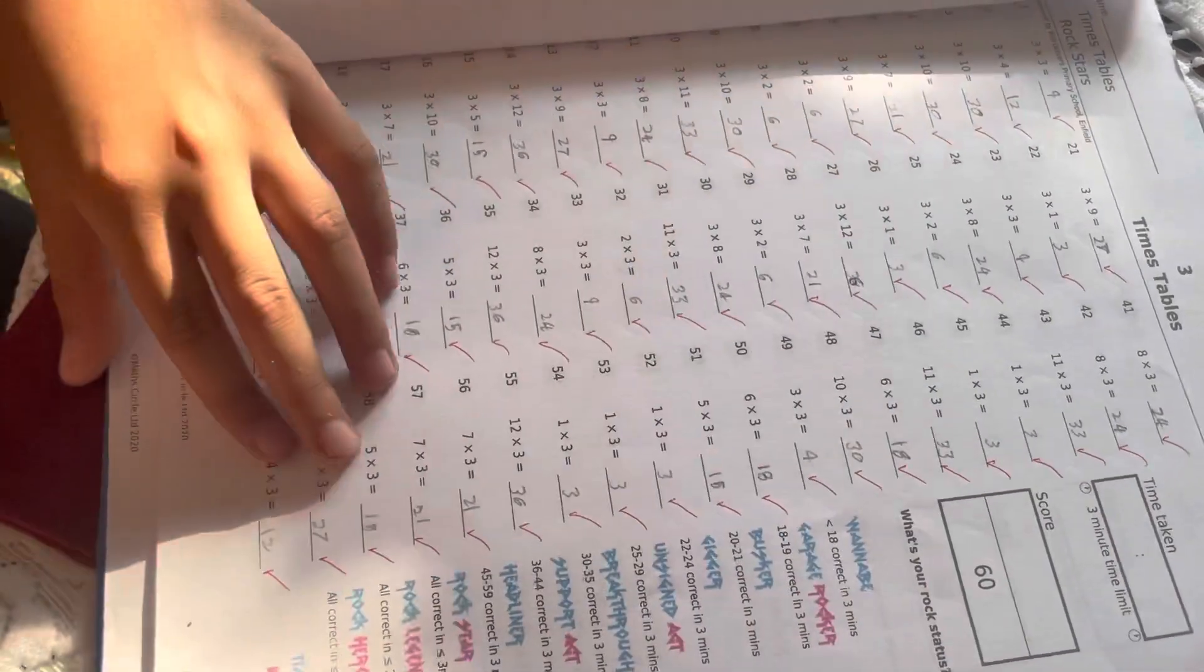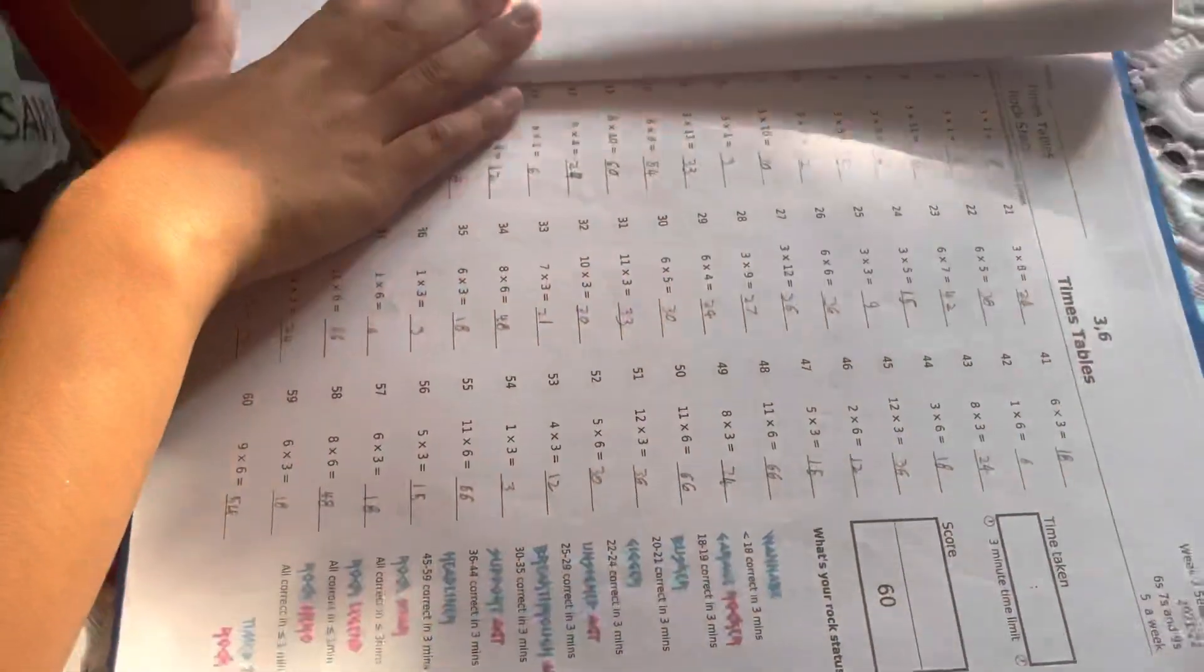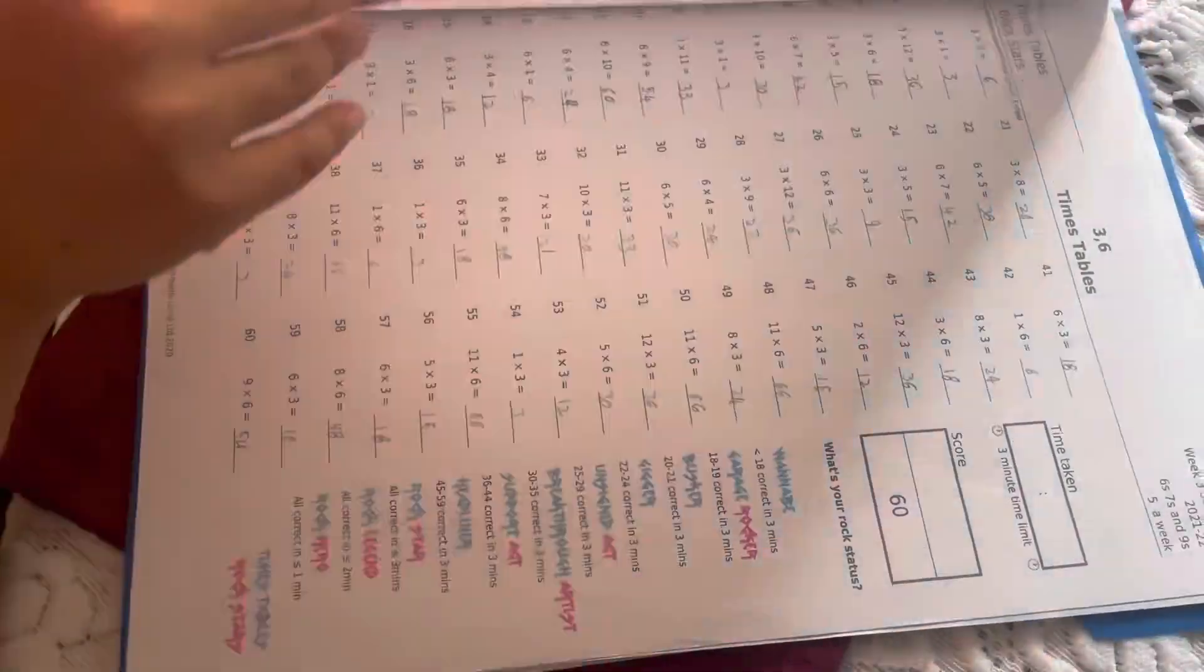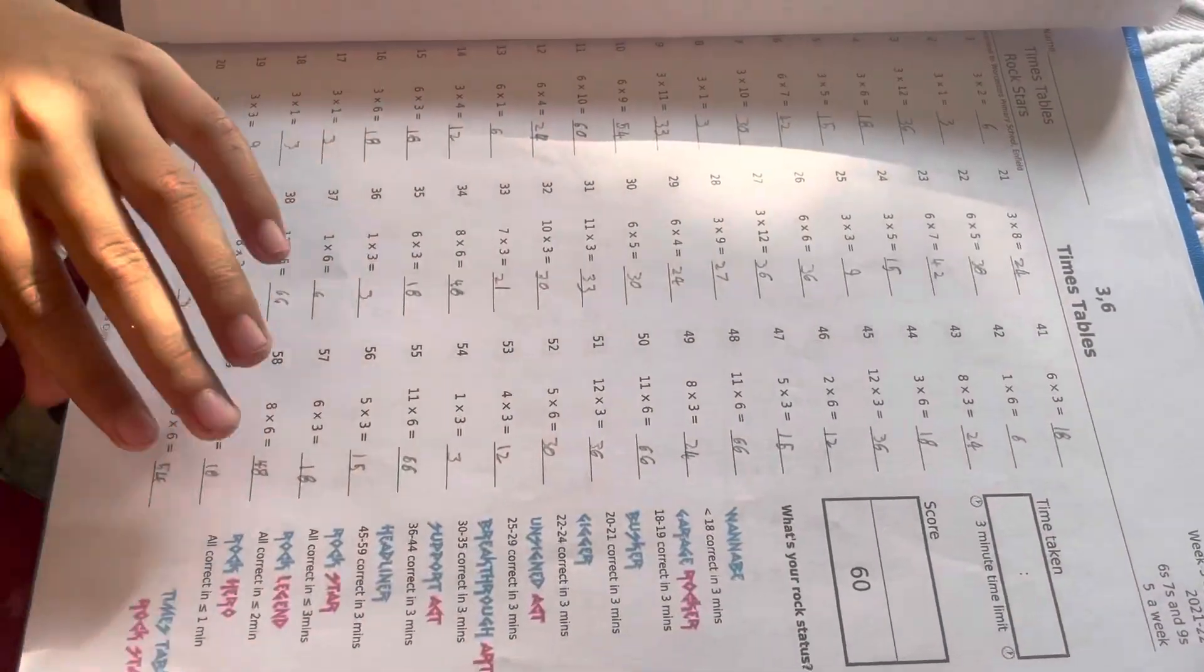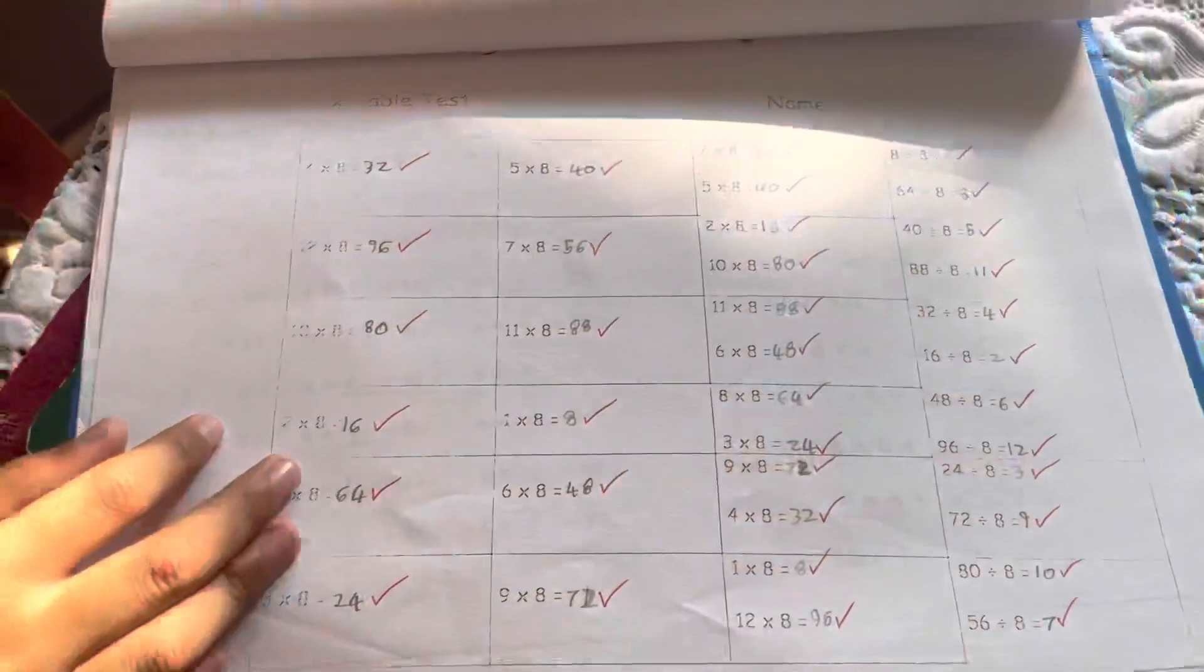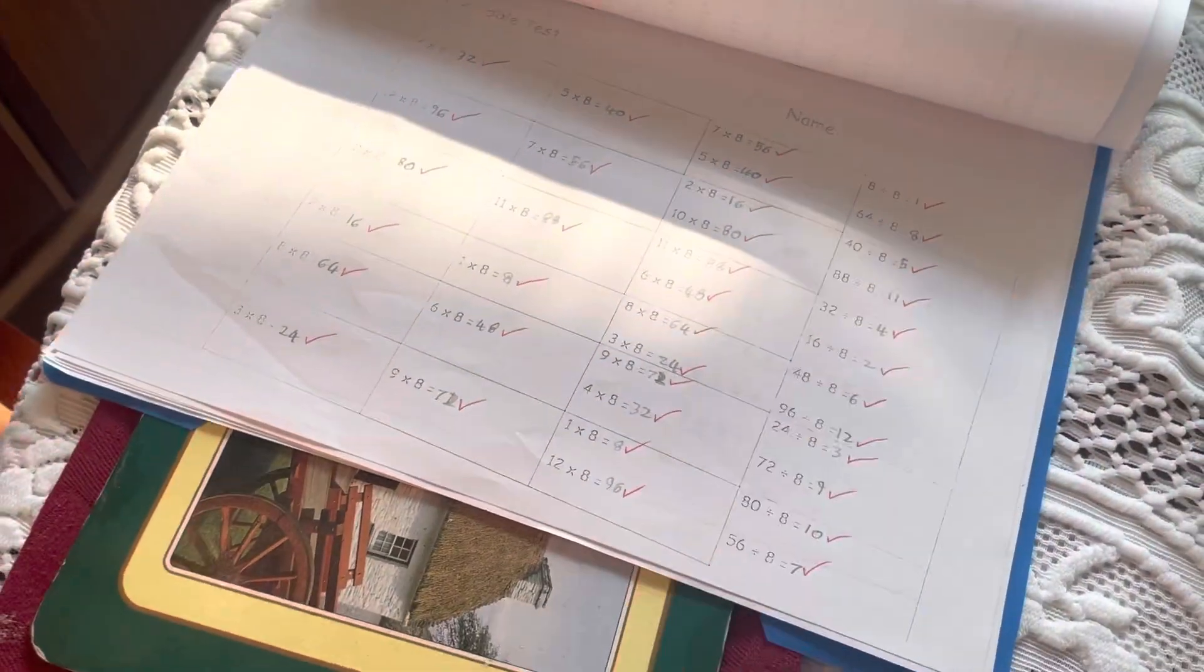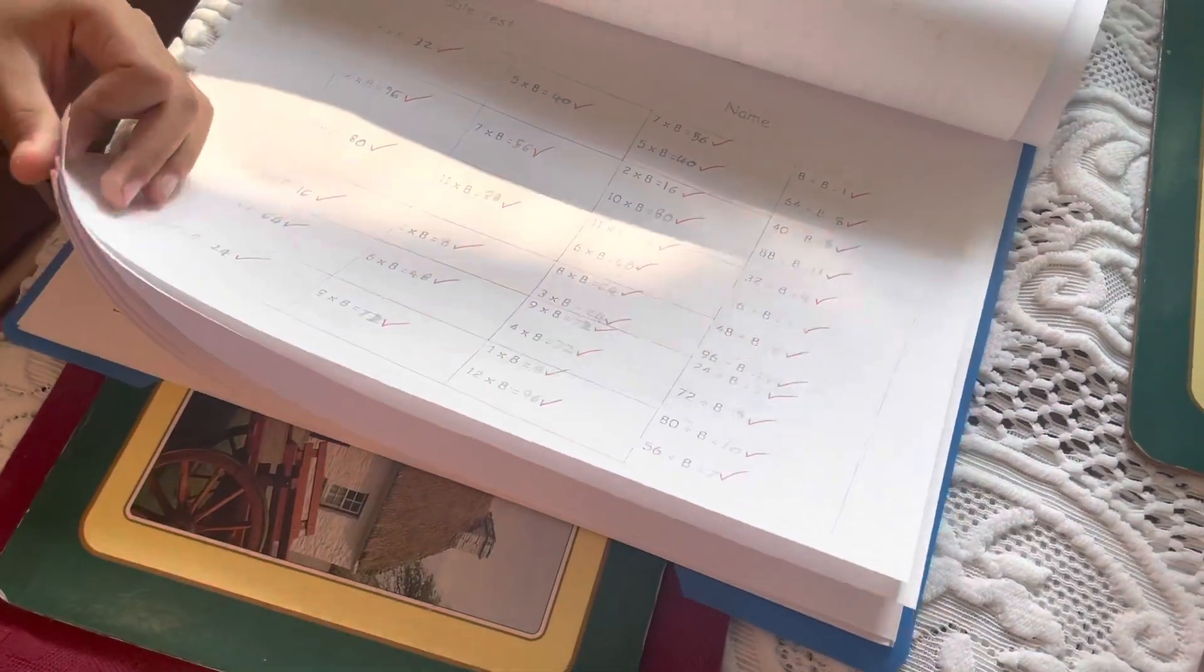No. It's only three times tables again. Then, wait, yeah, threes and sixes. And out of 60 again. Yeah, I got all 60 out of 60 here. And then here we got, I got all of them correct. Oh. Again.